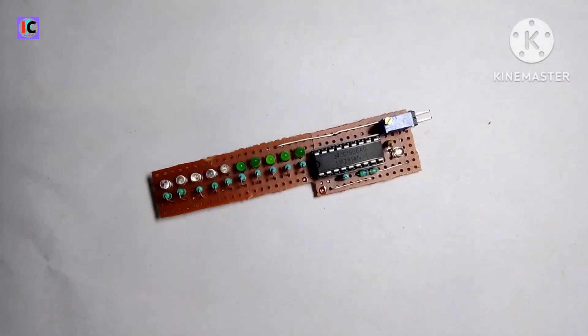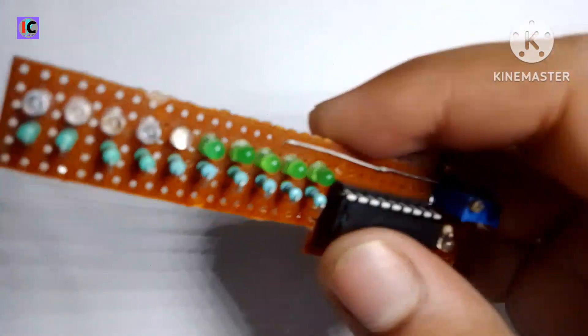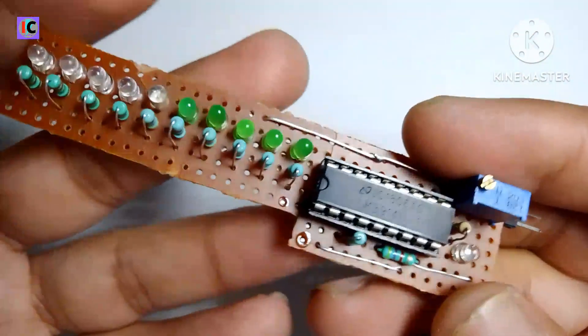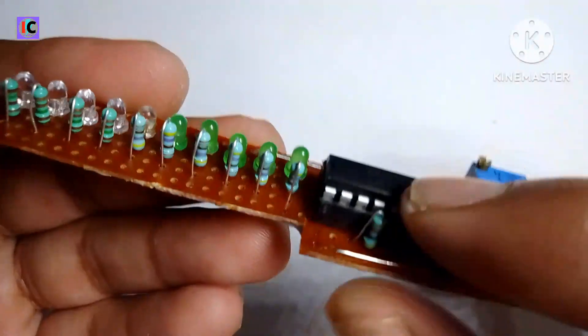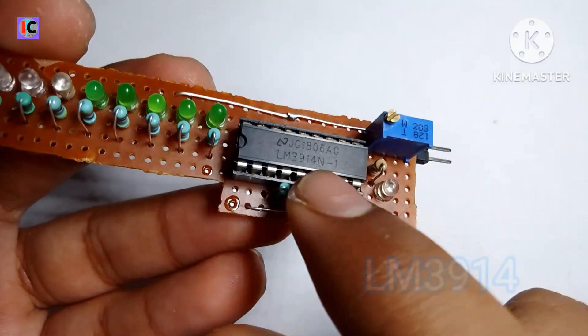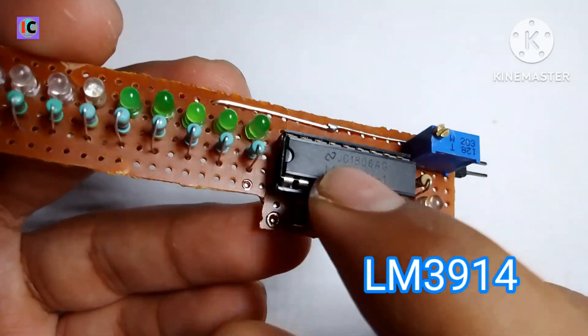Hey guys, welcome to my channel Innovation IC. In this video we are going to make a battery voltage indicator. You can see this module that I made on a zero PCB, and this is basically based on the LM3914 IC.